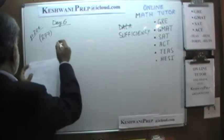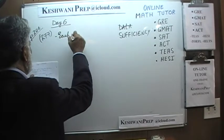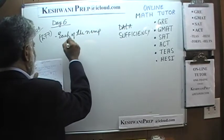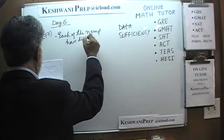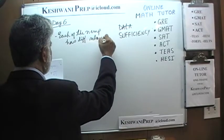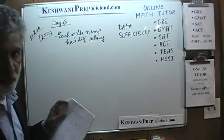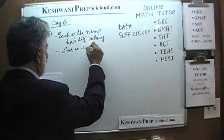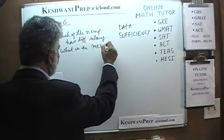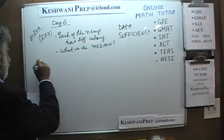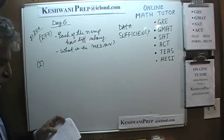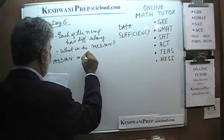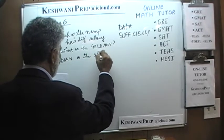Here is the first one. It says each of the n employees of a certain firm has a different salary — in other words, no two individuals get the same salary. The question simply is: what is the median? Let's see what we are given in Statement 1. Statement 1 says the median is the 15th salary.